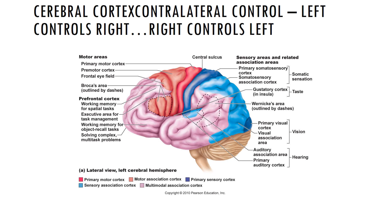Other sensory areas include the olfactory cortex, located on the medial aspect of the temporal lobe, responsible for the conscious perception of odors or smells. The gustatory cortex, located in the insula and portions of the frontal lobe, is involved in the conscious perception of taste. The visceral sensory cortex, located in the insula, is involved in the conscious perception of visceral sensations, for example a full bladder or an upset stomach.